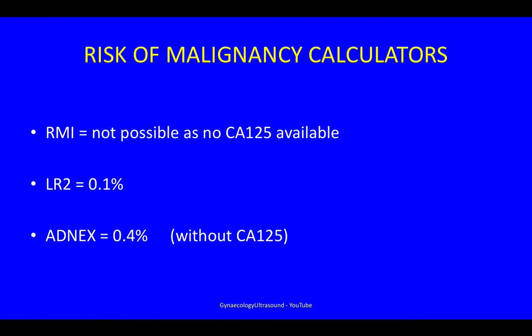Looking at other risk of malignancy calculators: you can't calculate the RMI because there's no CA125 level available. The LR2 is 0.1 and the ADNEX is 0.4, both calculated without a CA125 level.